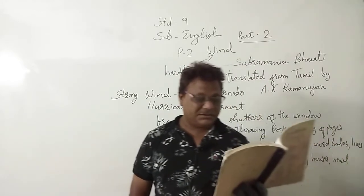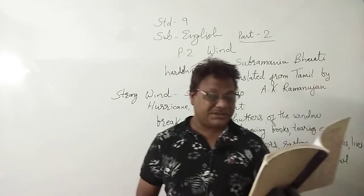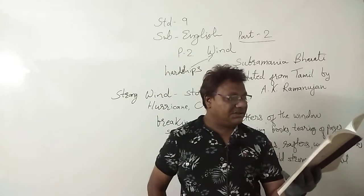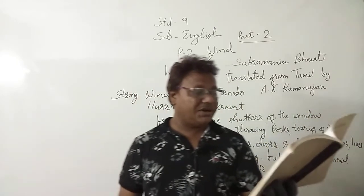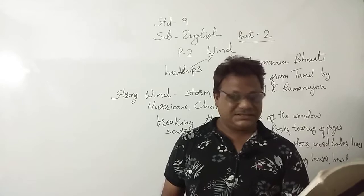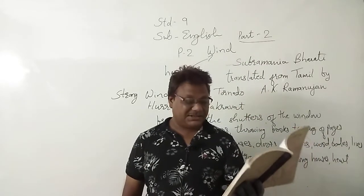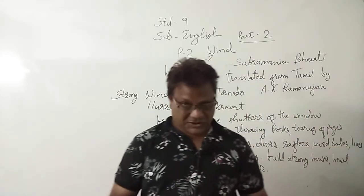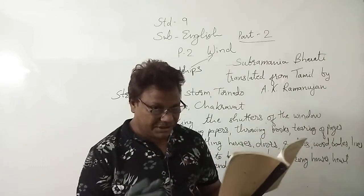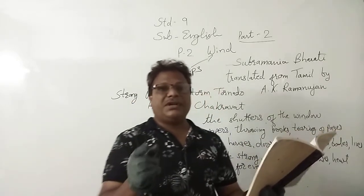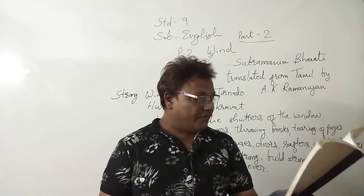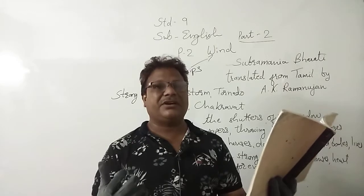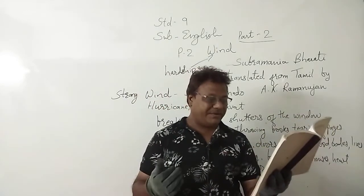What does the poet say the wind god winnows? The wind god winnows all these — houses, doors, rafters, wood, bodies, lives and hearts — and crushes them all. What should we do to make friends with the wind? If we want to make friends with the wind, we need to build strong houses, we need to join the doors firmly, we need to be firm of body, and we need to remain steadfast and make our heart steadfast. Then only the wind will be friends with us.